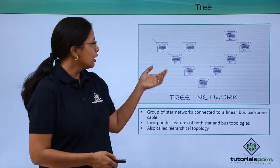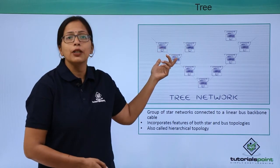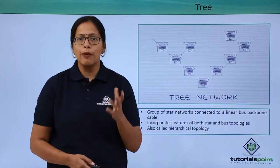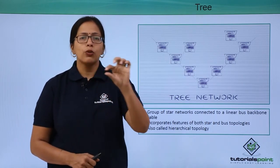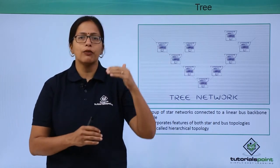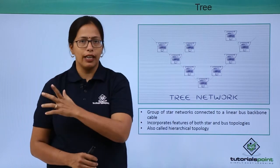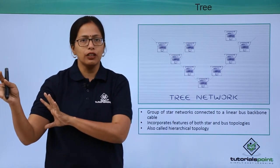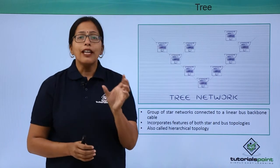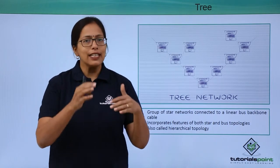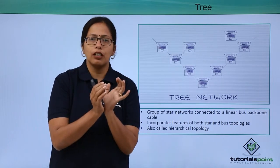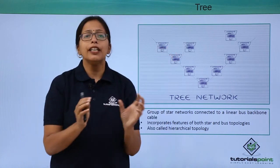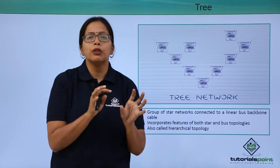Here essentially a group of star networks are connected together in a bus topology. A bus has a coaxial linear cable with workstations attached on both ends and one server at the end of the bus. In a tree topology, instead of individual workstations attached to the main coaxial cable, there will be different star topologies.